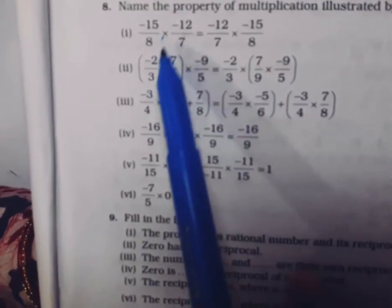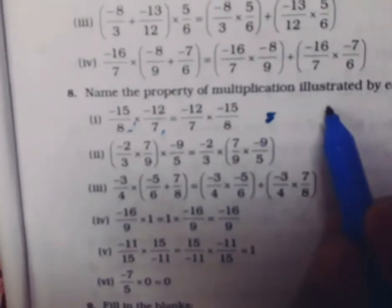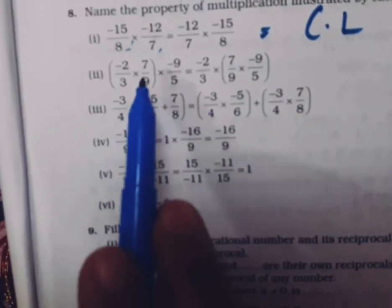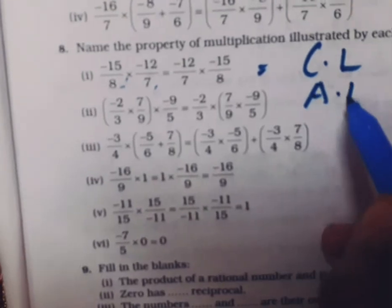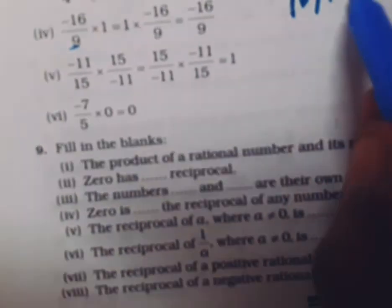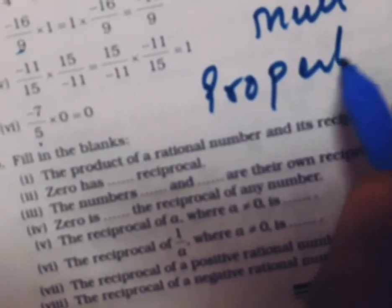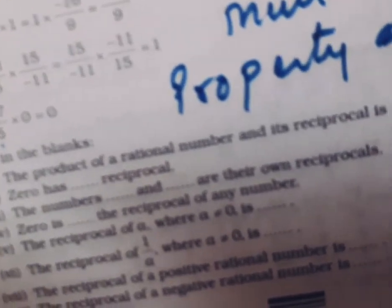Question number 8, you have to name the property. See what properties are there. This property, -15/8 × -12/7, see two same numbers, only here and there they are changing. Means numbers are changed. This is commutative law. This is associative law. Here see, the sum we just solved is distributive law. This is distributive law. What is this? Multiplicative identity. What is this? Multiplicative inverse. This is property of zero. What is this called? Property of zero.